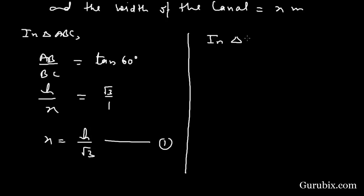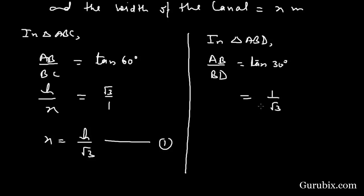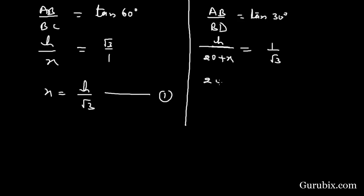Now we shall move to triangle ABD. Here we shall find the ratio of AB and BD. This ratio equals tan(theta), and theta is 30 degrees here. We know that tan(30°) = 1/√3. AB is h and BD is 20 + x, therefore 20 + x = h√3.